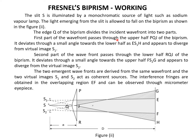The first part of the wavefront passes through the upper half of the prism, PQJ. It deviates through a small angle towards the lower half, and this beam appears to diverge from the virtual slit S1. The upper portion of the wavefront deviates towards the lower side and appears to come from the virtual source S1.